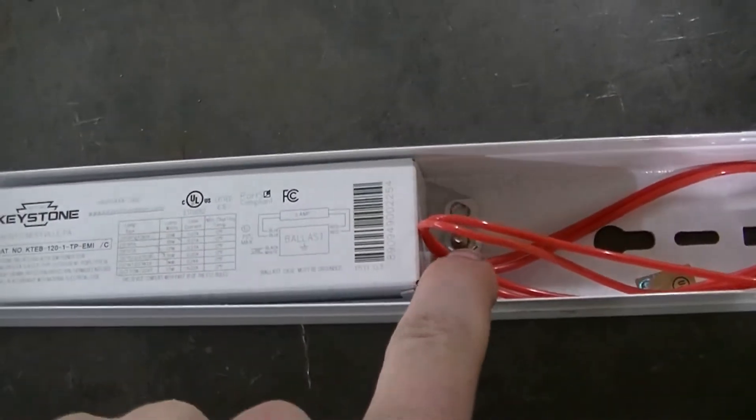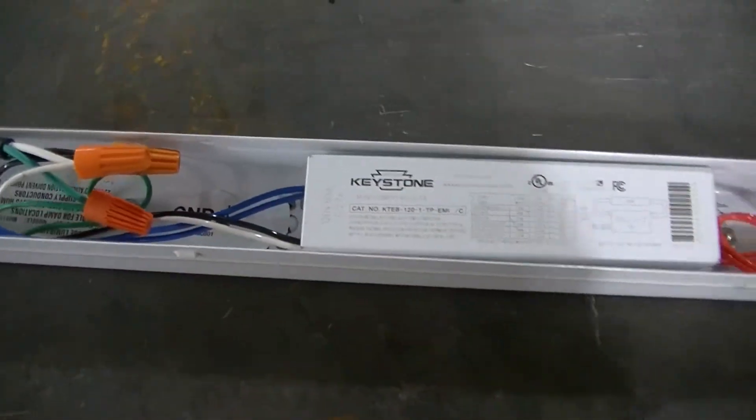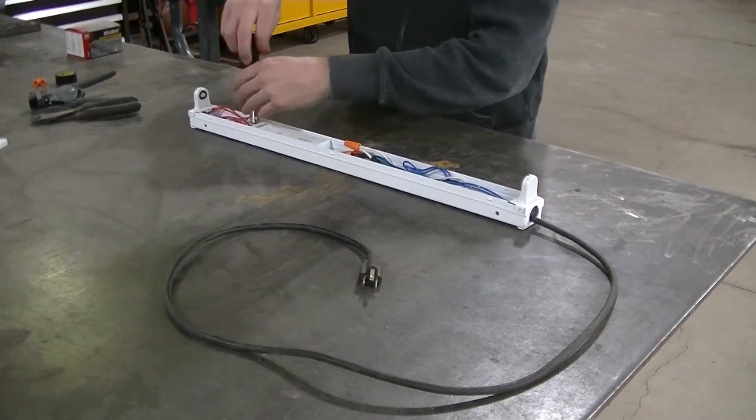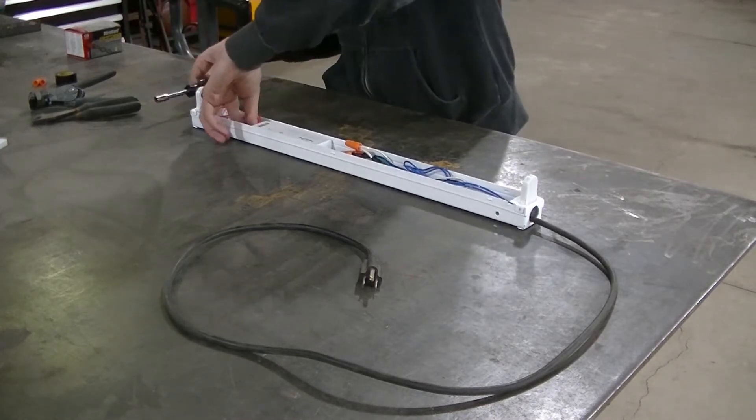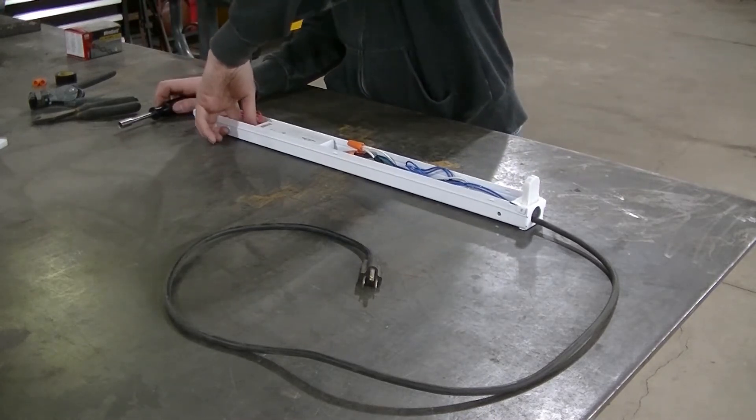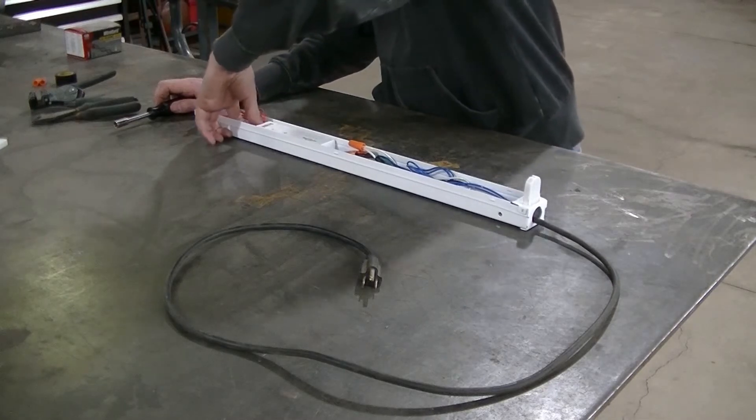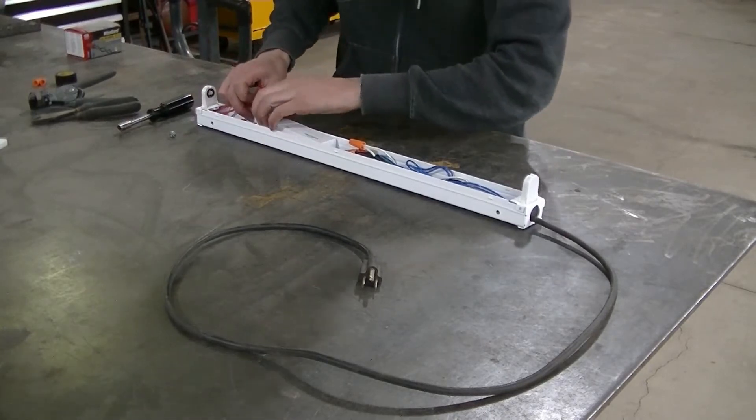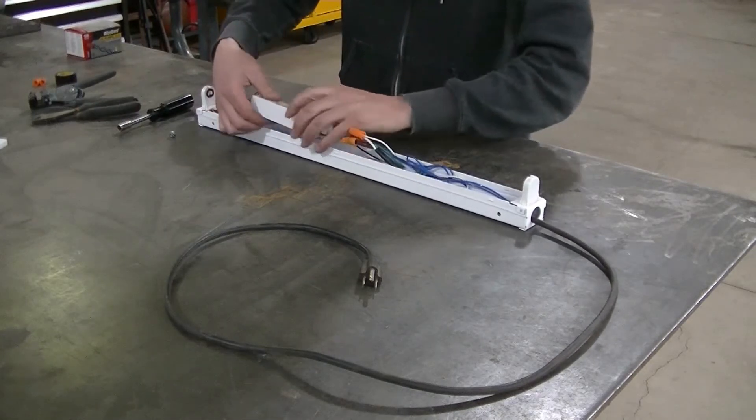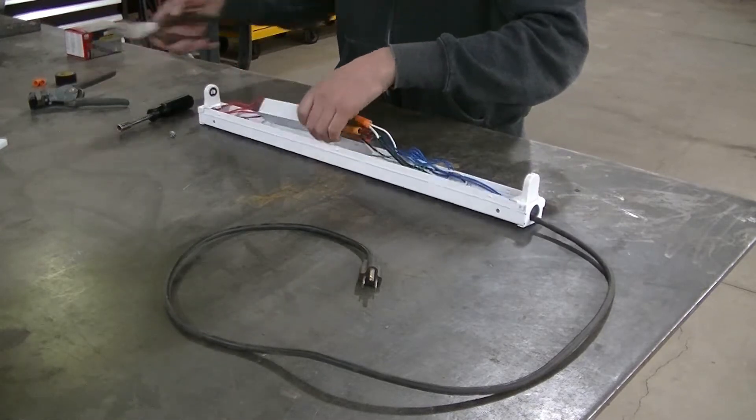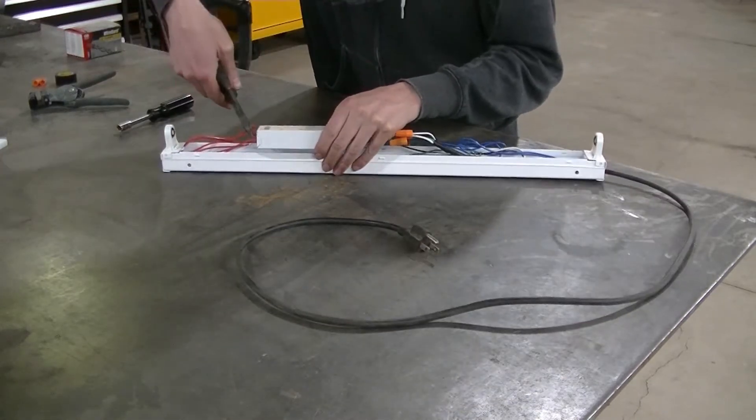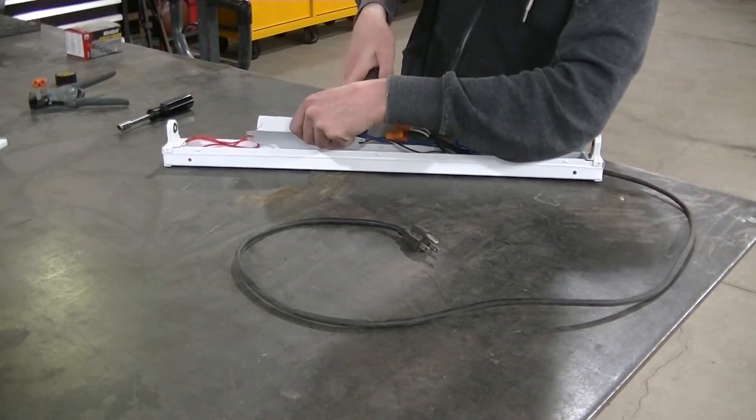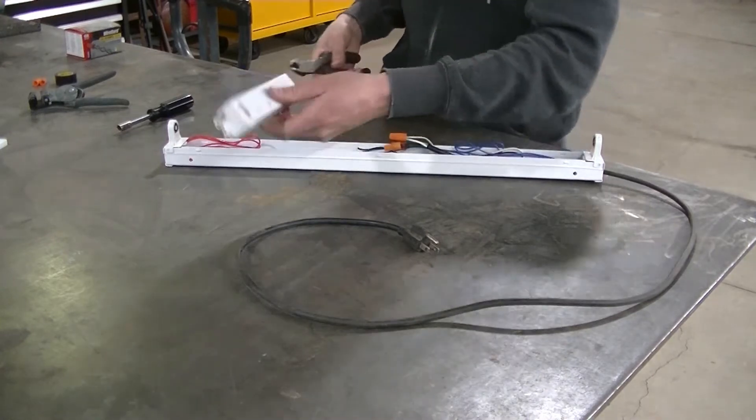So I'm going to cut this ballast out. It is bolted in right there. That's why we needed that socket. And then it just slides out. So I'm going to pull the ballast out here. It's got a nut. It'll pull out. And then I'm going to just cut the wires real close to the ballast. So that gives me maximum wires to use in the conversion here.